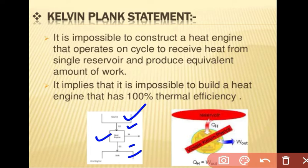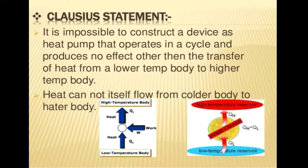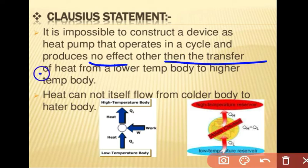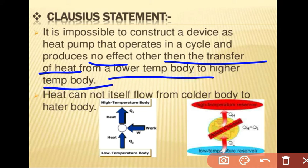The Clausius statement: it is impossible to construct a device — a heat pump — that operates in a cycle and produces no effect other than the transfer of heat from a lower temperature body to a higher temperature body. Heat cannot flow by itself from a cool body to a hot body.